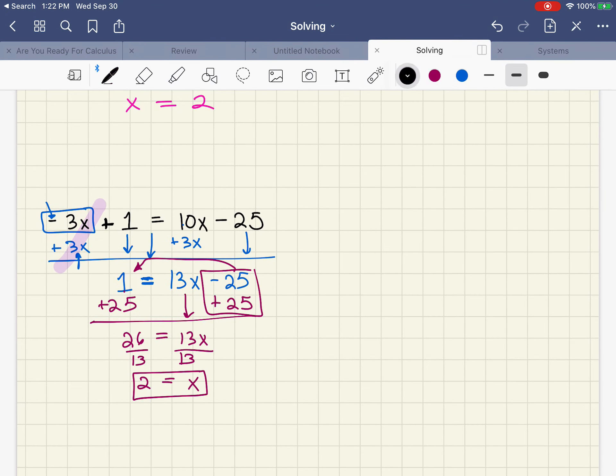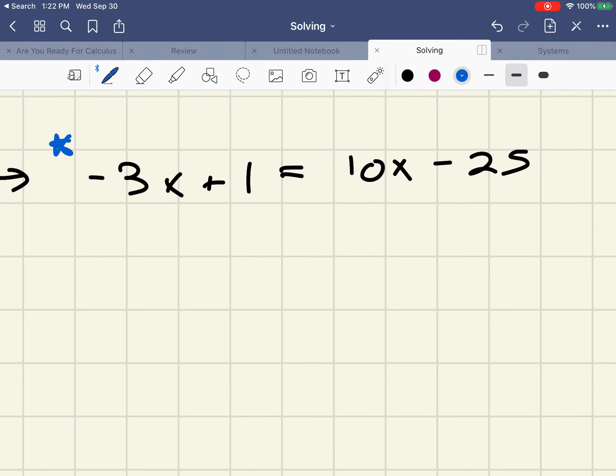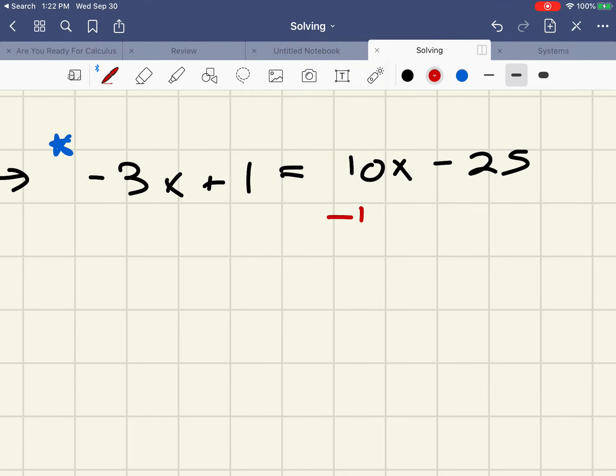Now if I were to do that a different way, it's quite acceptable to have multiple different ways to solve a problem. I'm going to run through the same exact equation in a separate way. Instead of moving the negative 3x, I'm going to move the 10x, so I'll subtract 10x from both sides.